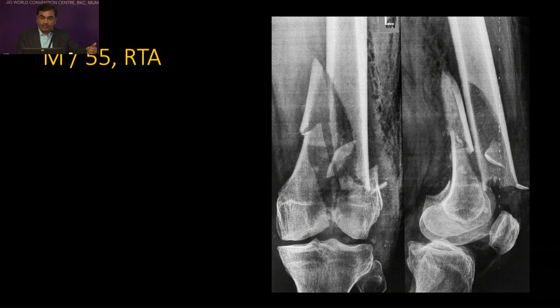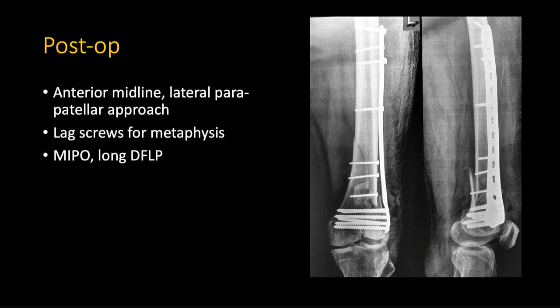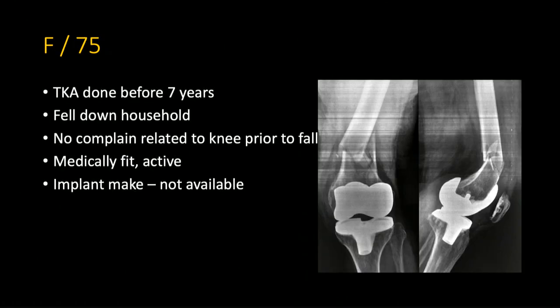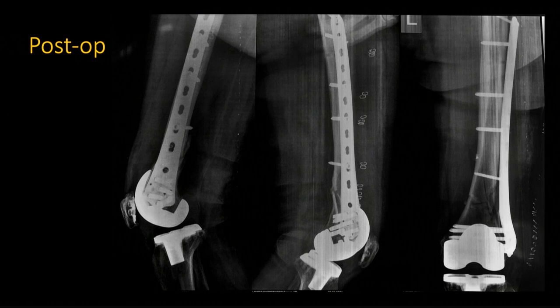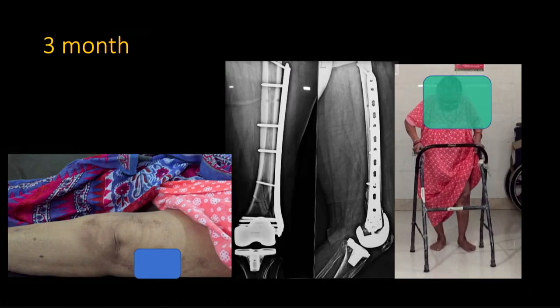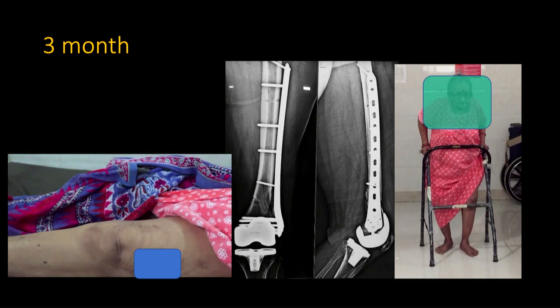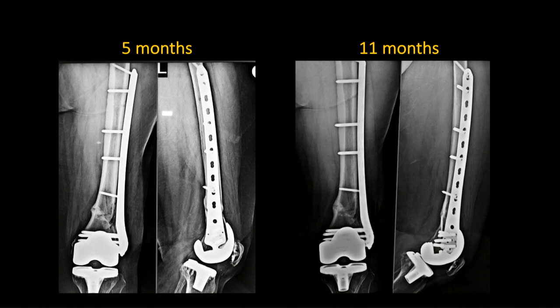Is bridging plate alone sufficient in distal femoral fractures? We take a case where there is a comminuted distal femoral fracture fixed with bridging mode — only the big cortical piece is lagged — and there was nice healing with the lateral plate alone. Another case: TKR done, 75-year-old lady, 7 years passed, no knee complaints, extra-articular distal femoral fracture. We did a single distal locking plate in bridging mode, a dynamic construct for relative stability. At three months, patient was walking almost full weight bearing; at 11 months, absolutely anatomically healed with callus formation without any axis deviation.